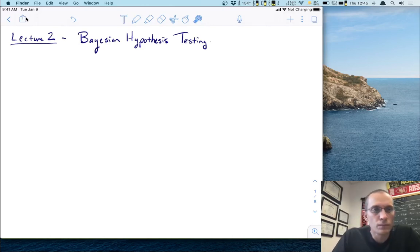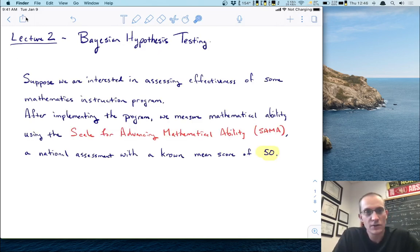Hi and welcome to lecture two. In this lecture I'm going to introduce the basics of Bayesian hypothesis testing as an alternative to our traditional frequentist testing that we have already talked about. So to motivate the things that we want to talk about in this short video, I'd like to have a hypothetical example. So let's start with that.